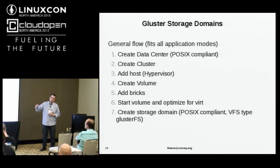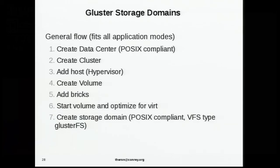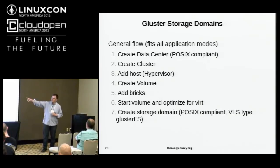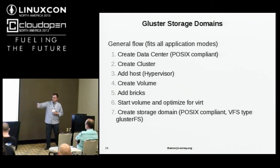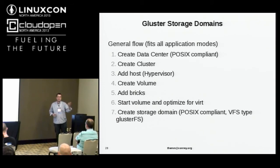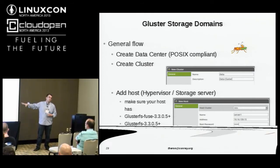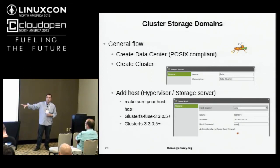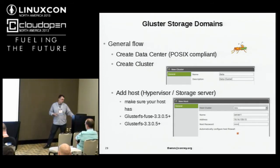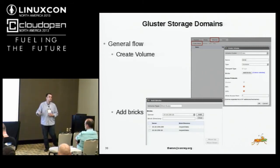If you're doing oVirt and Gluster in this arrangement with your commodity compute layer, you can directly attach the hypervisors and storage through one interface. There are some challenges, and you want to optimize volumes for virtualization workloads, but it allows you to push things into that layer. There's a VDSM Gluster plug-in that allows for that. You drop an agent on each storage node that talks to the oVirt engine — the vCenter-ish piece — and you can manage it through a Python SDK, making it programmable, or through CLI services.